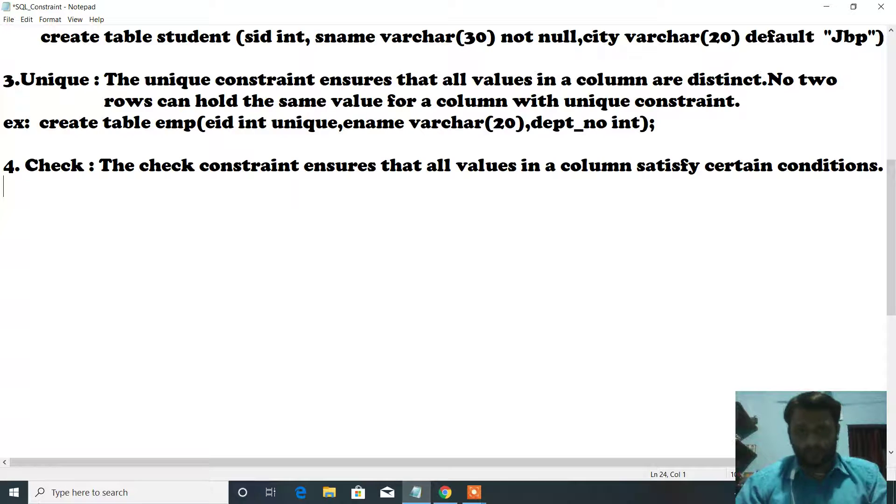Example of check constraint: I'm creating a check constraint in the table employee. Simply write CREATE TABLE EMP. The table name is employee with fields: EID (employee ID) as integer with unique constraint, ename as varchar size 25, department number as integer.